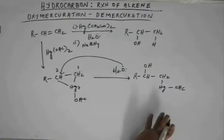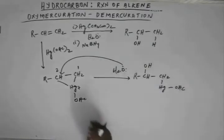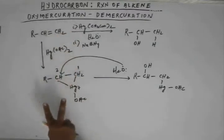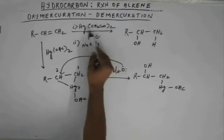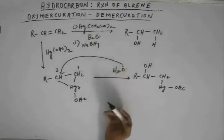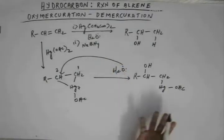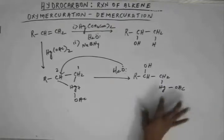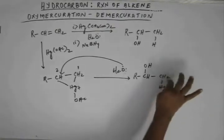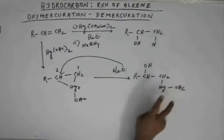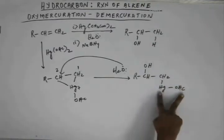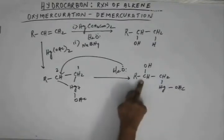This is oxymercuration. We have added an OH group and we have added a mercuric group. So this oxymercuration part of the reaction is complete. This mercuric acetate and water have shown their reaction. We now have a neutral compound, and this carbon has two hydrogens. The R group is not attached on this carbon, so the hindrance because of the mercuric acetate part is less relative to this carbon.